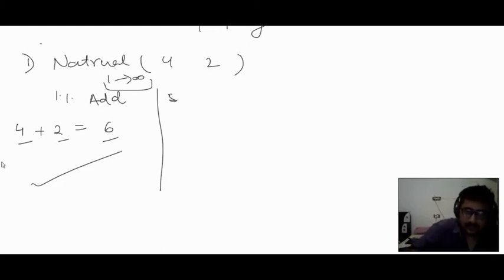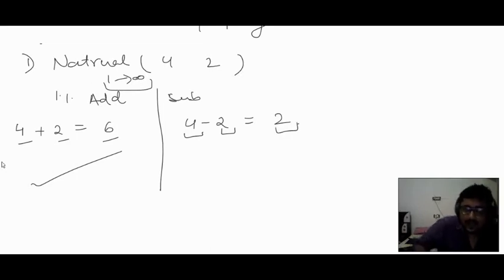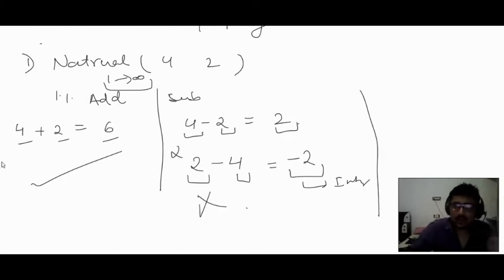Now subtraction: 4 minus 2 equals 2, which is a natural number. But 2 minus 4 gives a negative number — that is not a natural number, it is an integer. So subtraction does not satisfy closure property for natural numbers.